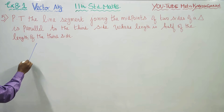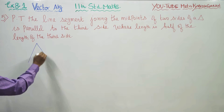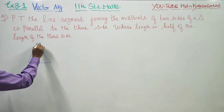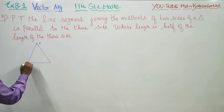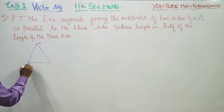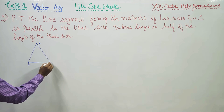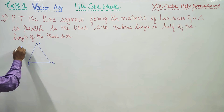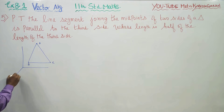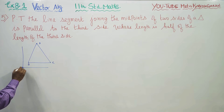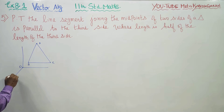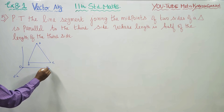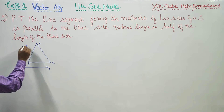Let us consider a triangle with the position vectors of vertices A, B, C. They are always fixed with a reference of an origin. This is my x-axis, this is my y-axis, this is my z-axis.